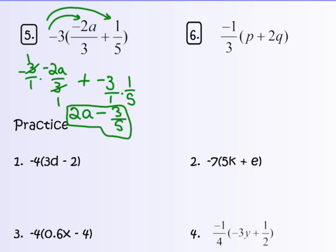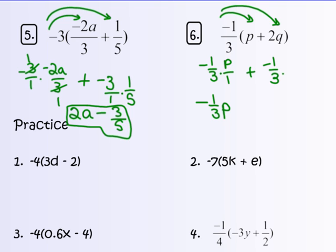Number 6: negative 1 third times the quantity p plus 2q. Negative 1 third times p gives negative 1 third p. And negative 1 third times 2q — that's negative 1 times 2q over 3 — gives negative 2 thirds q. So the answer is negative 1 third p and negative 2 thirds q.